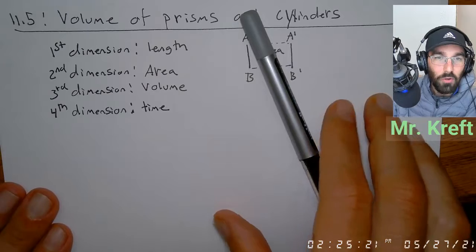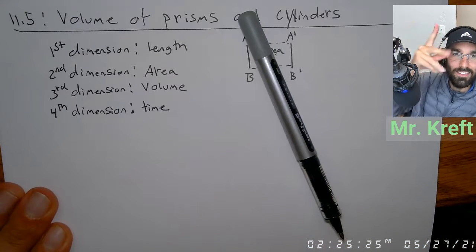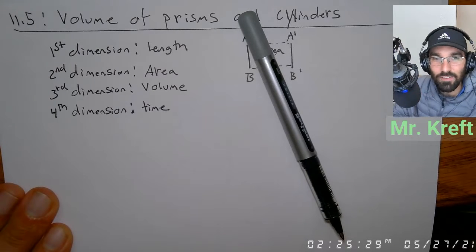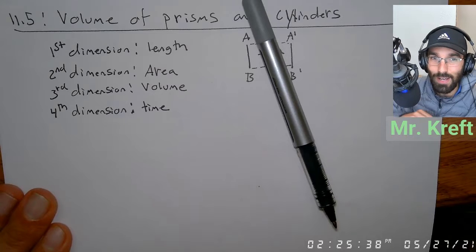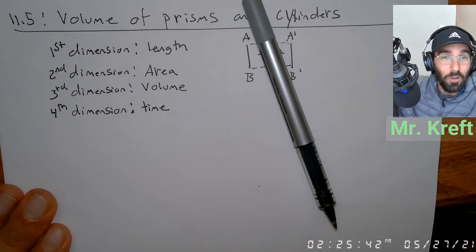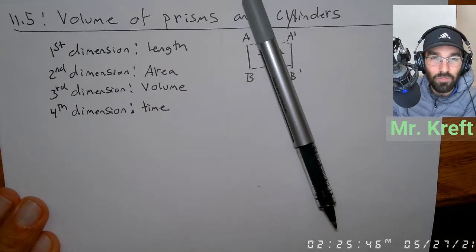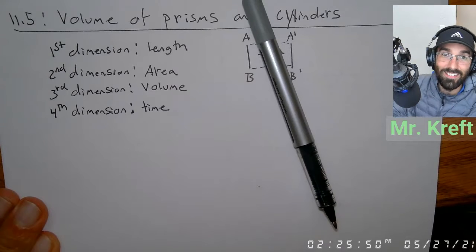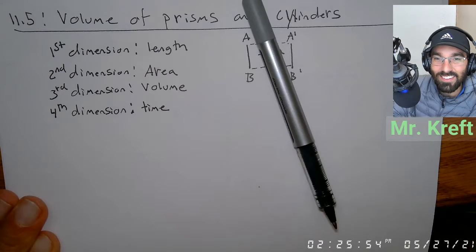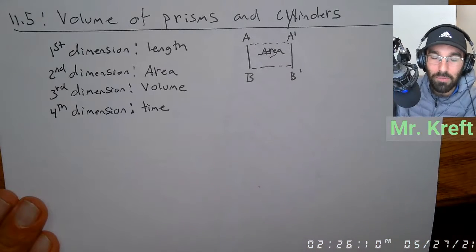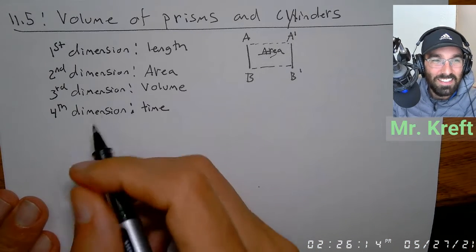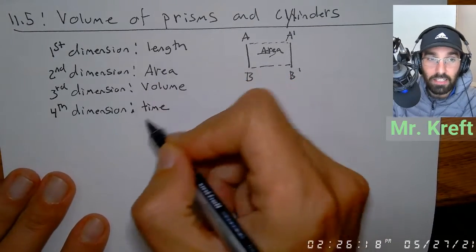Think about it: when you see me moving, that's just the passage of time. If you take a picture, you freeze time and I'm frozen — no movement. So time is the fourth dimension: when three-dimensional objects move, that is time. This should make some intuitive sense when you break it down.